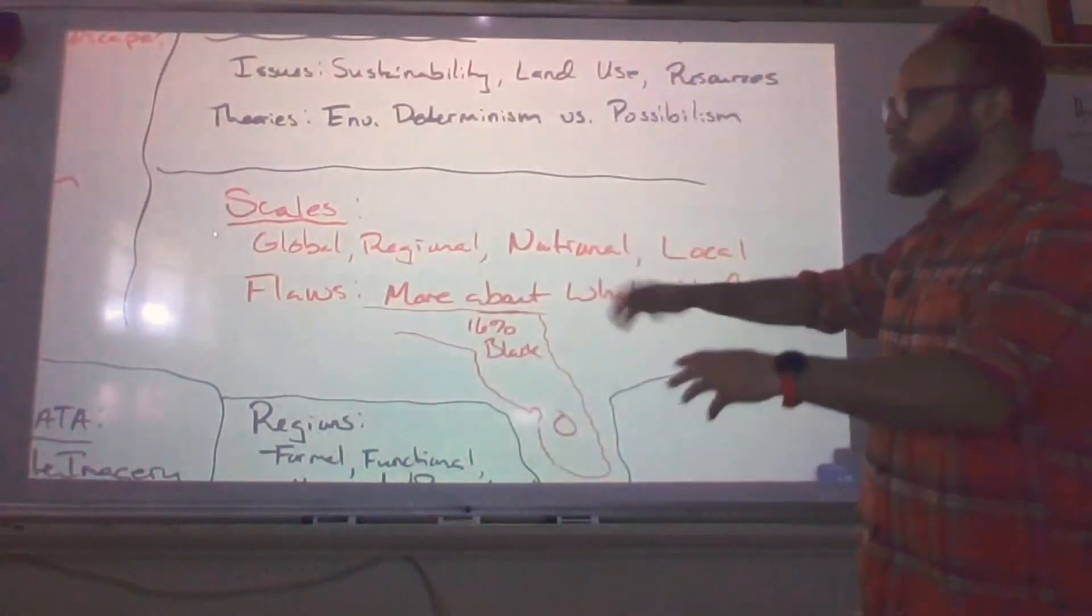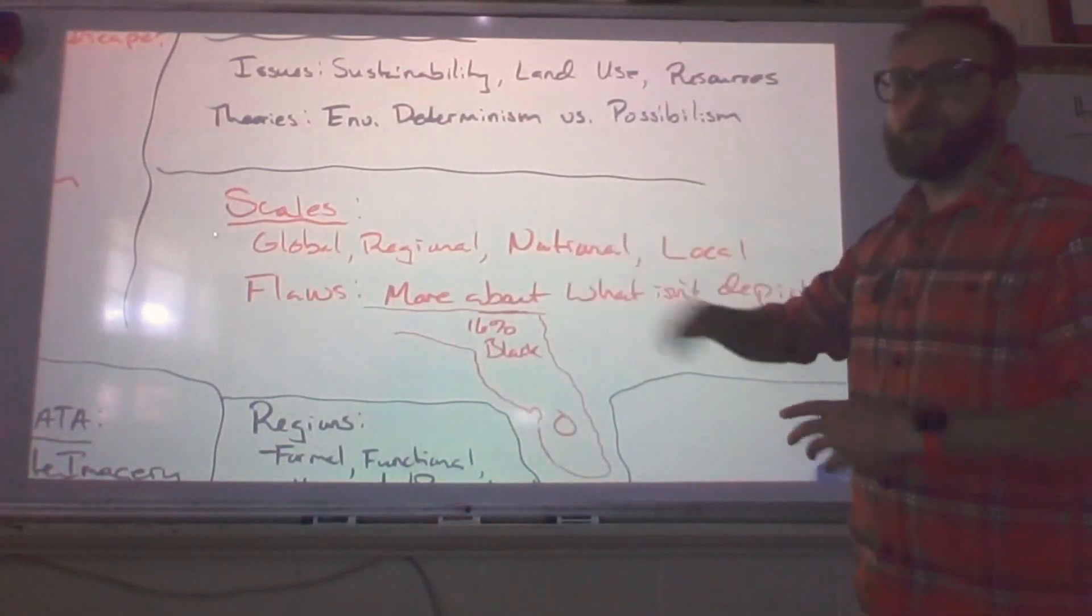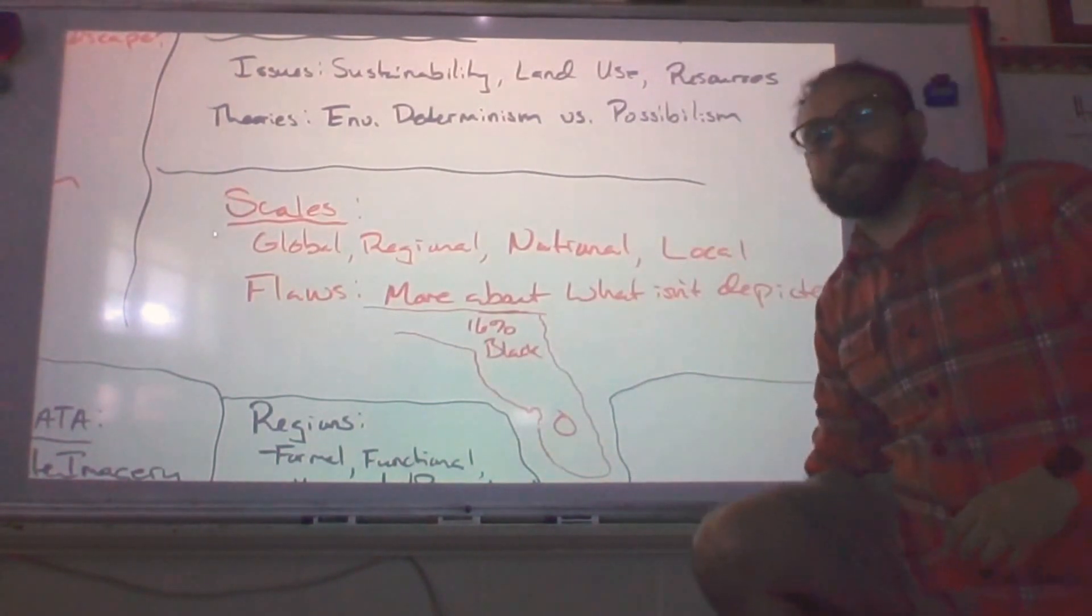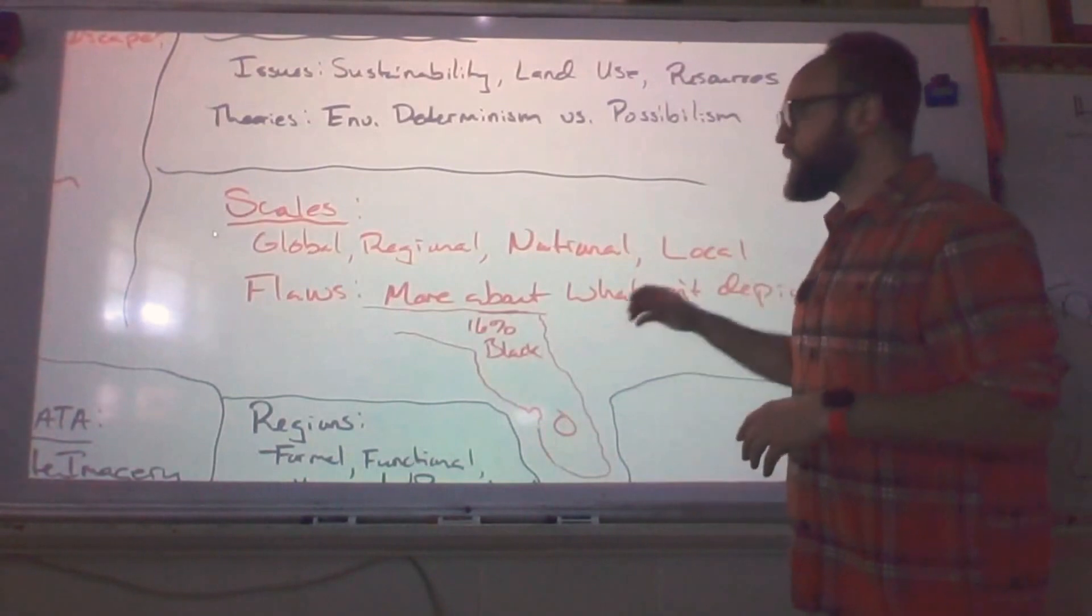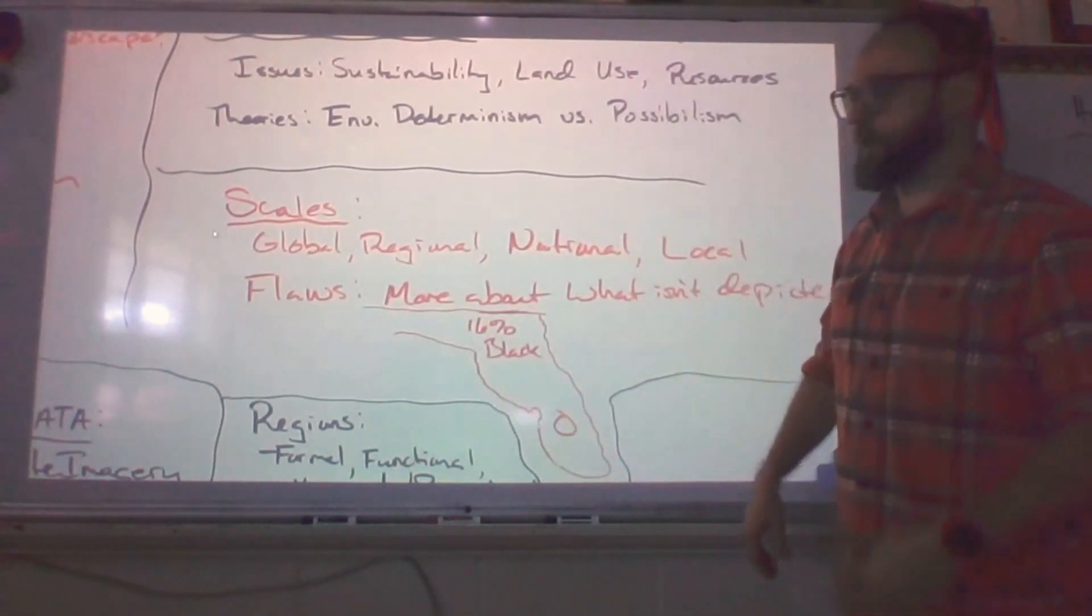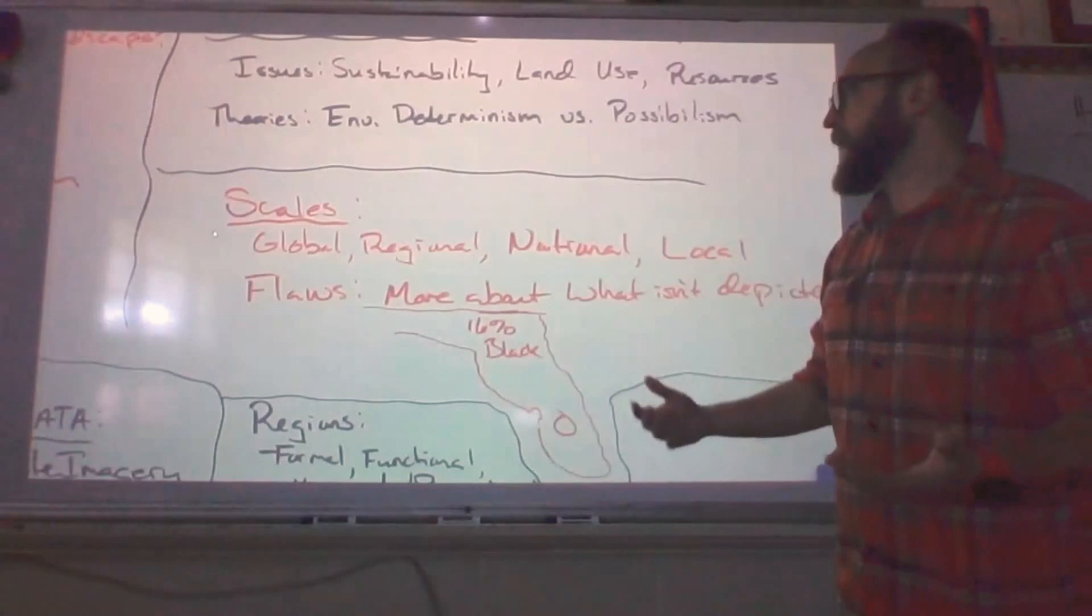Scales to consider. Global would be worldwide. Regional, which would be, you know, like the south, for example, or the sunbelt. National would be the state level. That means, like, the United States, not Florida. And then local would obviously be within your community or county.